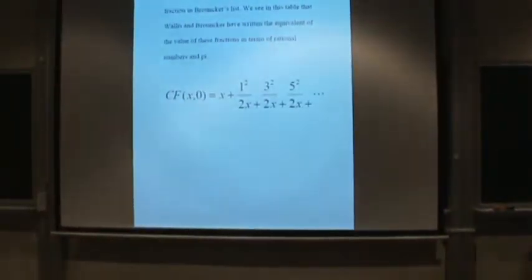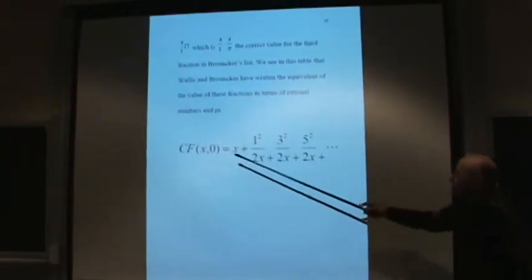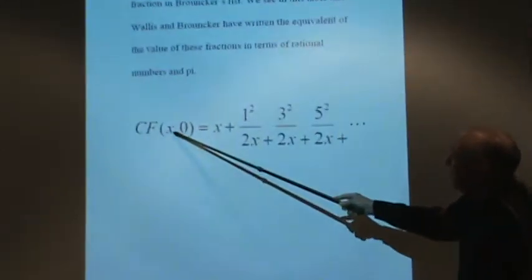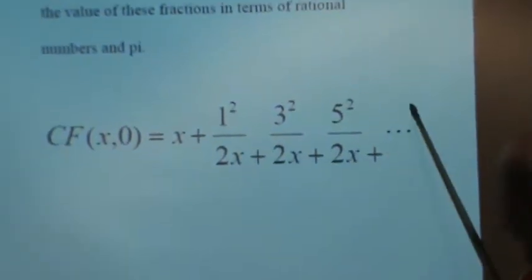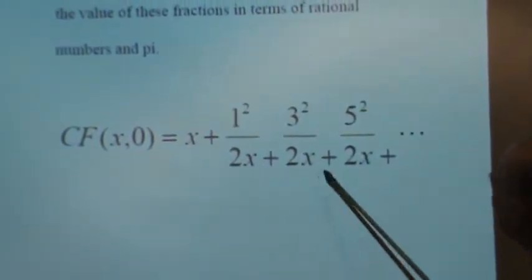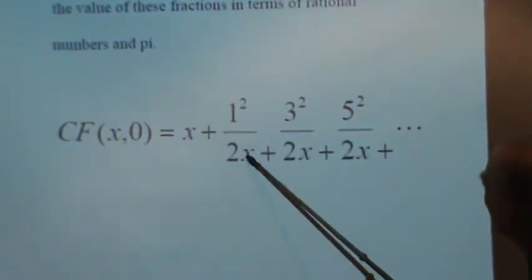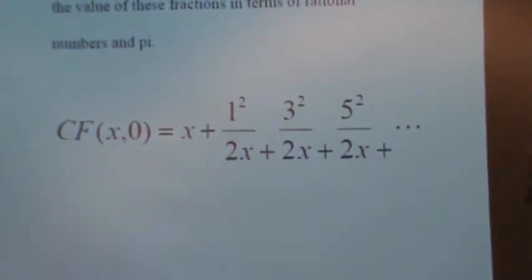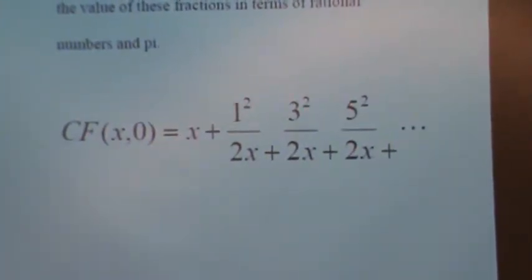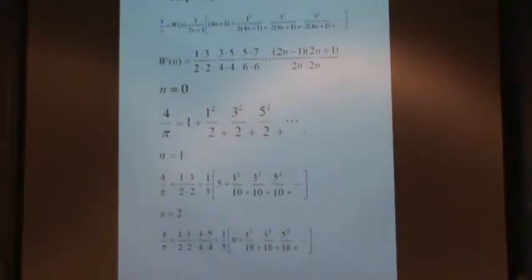And I may at times use this notation, CF, continued fraction, for x, to stand for this. Because this is the standard form in which all those continued fractions appear. You have an x, and then you have twice x in the denominator, and then the odd number squared in the numerator.